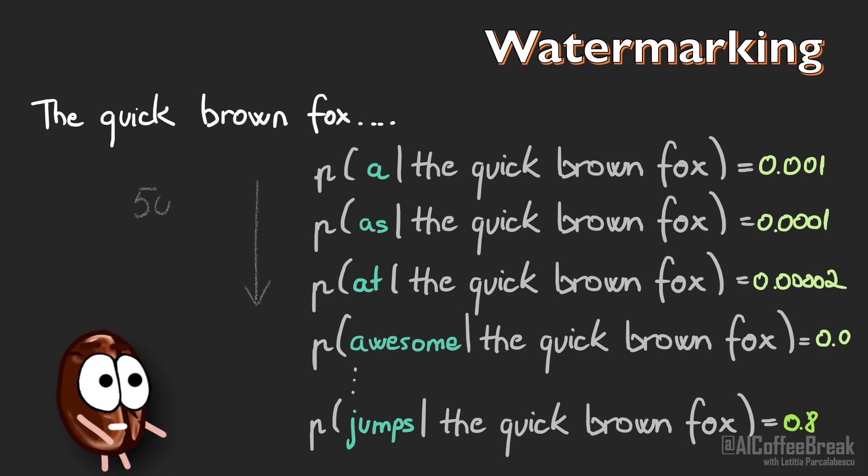We have, let's say, 50,000 English words the language model knows about and predicts the probability for, given the previous words. But before choosing the next word, watermarking randomly sets, let's say, 20% of all these words to a blacklist. So the language model in decoding can choose only from the rest 80% of the words.